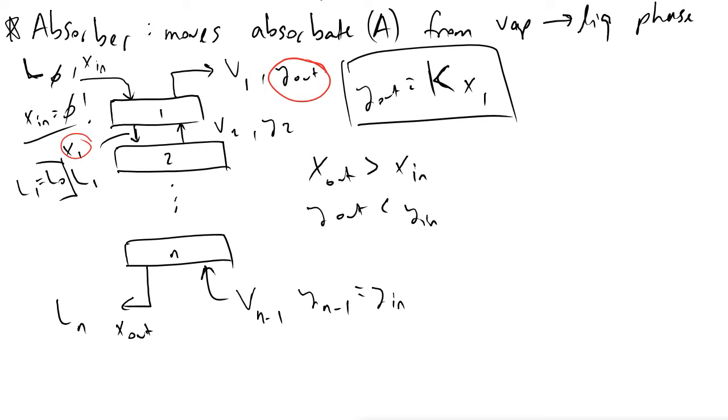And so the reason the Kremser method is able to be applied is because we were able to say that L_0 was equal to L_N, we can let that equal some constant L. And then we can also say that the same can be said for the vapor flow rate. So V_1 would be equal to V_N minus one, which we can just let that be equal to V.